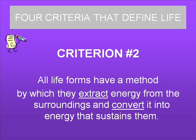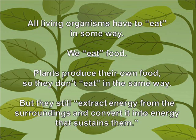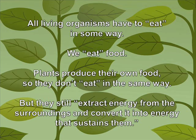Now we're going to go to the second criterion that defines life. All life forms have a method by which they extract energy from the surroundings and convert it into energy that sustains. What this criterion is saying is that all living organisms have to eat in some way. We eat food, but plants produce their own food, so they don't eat in the same way. But they still extract or take energy from the surroundings and convert it into energy that sustains them.